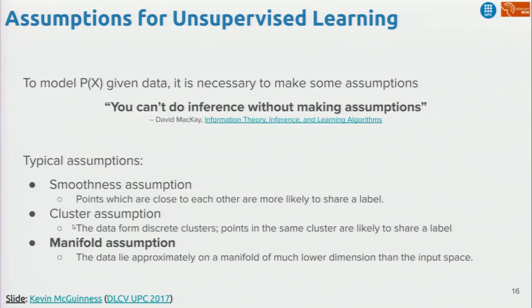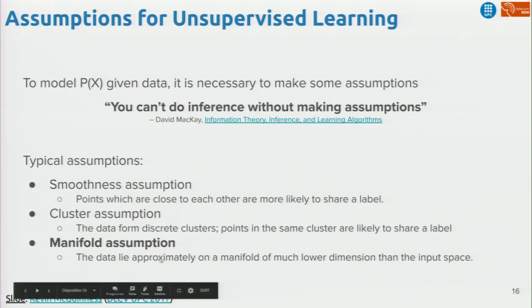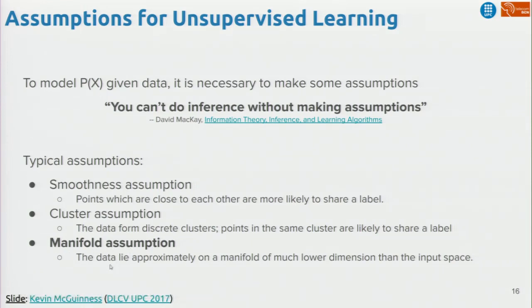There are also assumptions like: your data in this feature space forms clusters that correspond to semantic classes — when we train neural networks they will map semantic concepts to the same area of high-dimensional space. The one we're going to exploit quite a lot is the manifold assumption, which says that our data — images or video — lies approximately on a manifold of much lower dimension than the input space.